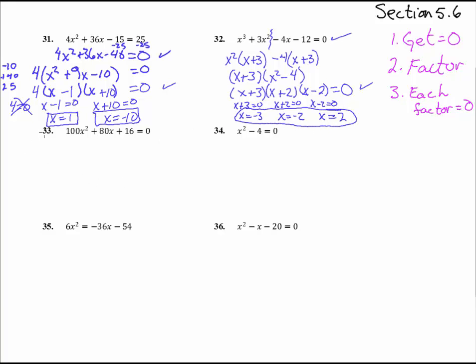Good. Number 33. First step. Get it equal to 0. Check. Excellent. Now, step number 2. Factor. First possibility is pull out a greatest common factor out of here. It looks like, let me see, 2 can come out of everything. Can anything bigger? Maybe a 4? Yeah, 4 can come out of everything. And you're left with 25x² + 20x + 4. Good. Equals 0. Okay. So we pulled out a greatest common factor. Now, we have three terms that are left here.